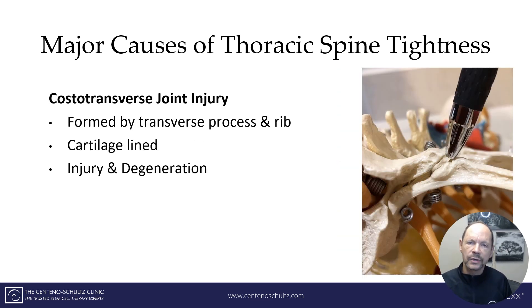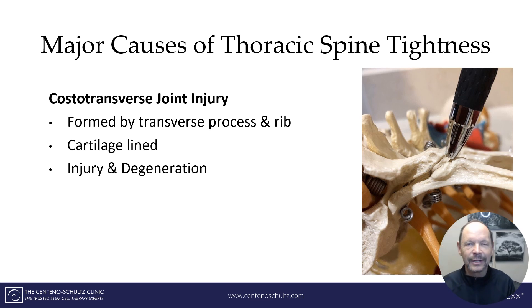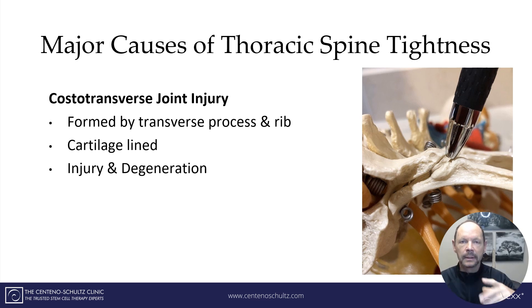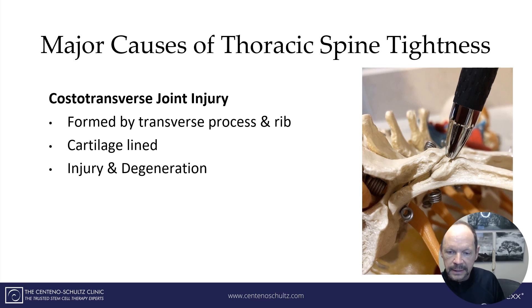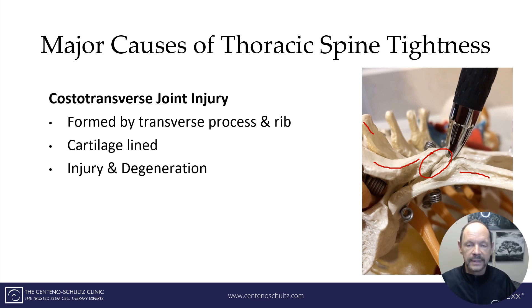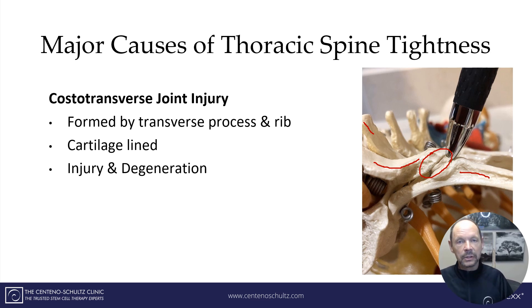The next cause is a costal transverse joint injury. The costal transverse joint is basically the union of the rib and the transverse process of the spine. The transverse process is an appendage that comes out to the side. The costal transverse joint is where the rib intersects with the transverse process, creating a joint similar to the thoracic facet joint. It has a cartilage lining and a synovium, and is susceptible to injury and degeneration, leading to thoracic spine tightness.